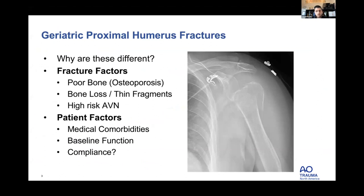Regarding the fracture: if we think of the humeral head as a rotten tomato, in older patients it becomes more like a composted or desiccated tomato — even worse. These patients don't have true bone loss in the open fracture sense, but they have impaction and comminution that is essentially bone loss, very thin fragments, and are definitely higher AVN risk.